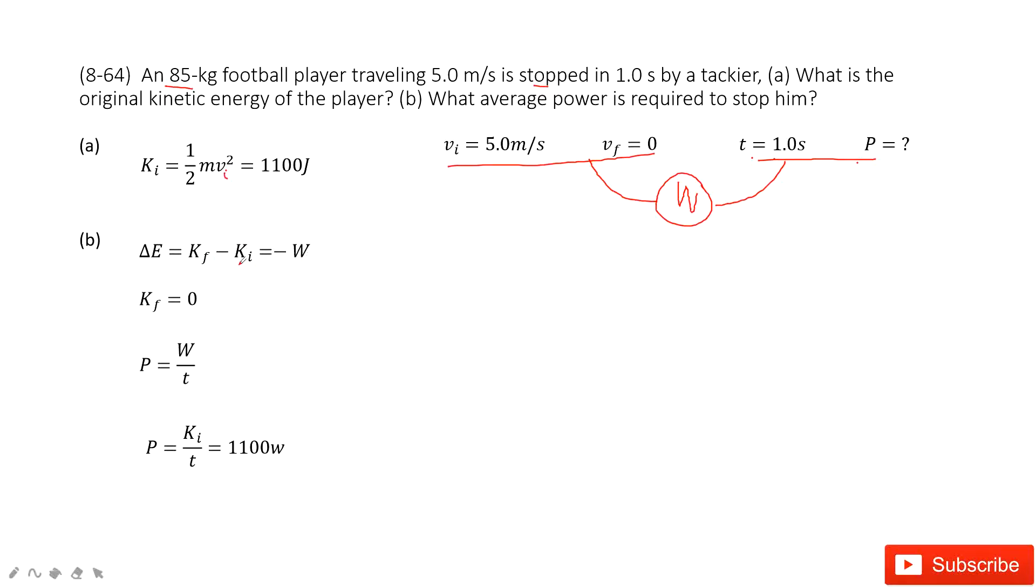So, very easily you can see, the final kinetic energy is zero because the velocity is zero. Initial kinetic energy is given, this one, right? So then you can get the work, right? The work is 1100 joules. And then, this work is equal to P times t. See? Very easy, you can get P equal to the work divided by the time. Then, we get the final answer.